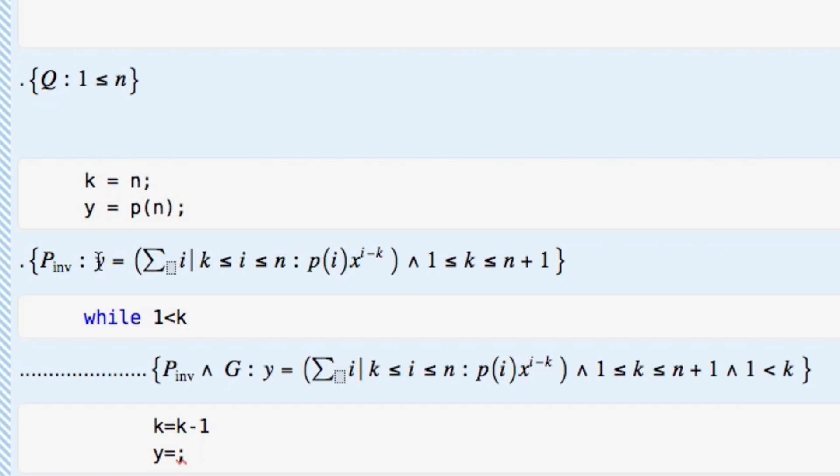And if you take that y and plug it in here for the loop invariant, then you get that that's equal to the sum from n to n of p of n for x to the... let's see, i is then n and k is n. So that becomes to the 0th power, but that's 1.